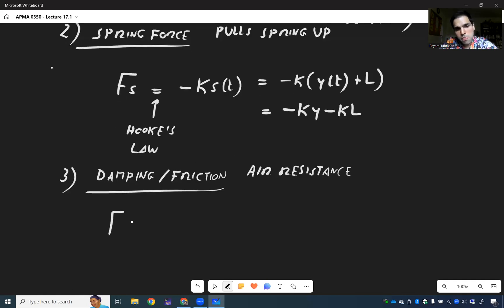And this is given as follows. So FR is minus, because again it goes the other way, gamma, which is again the damping constant. So it depends on the medium. And again, the faster it moves, the more the air resistance. So in fact it depends on the velocity. So minus gamma y prime.